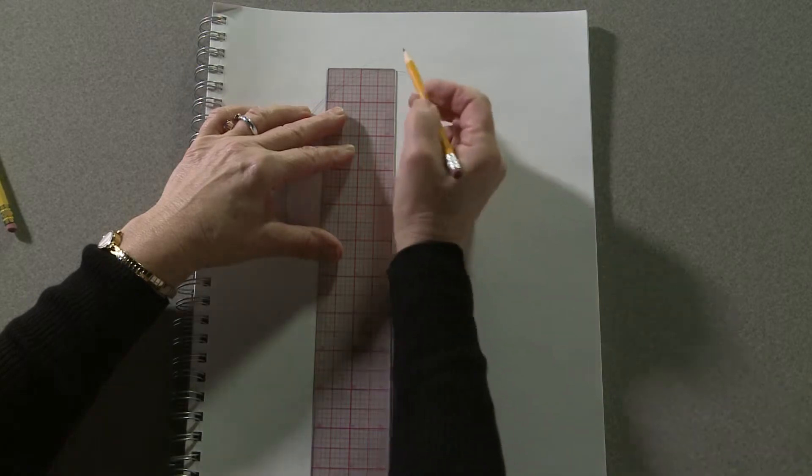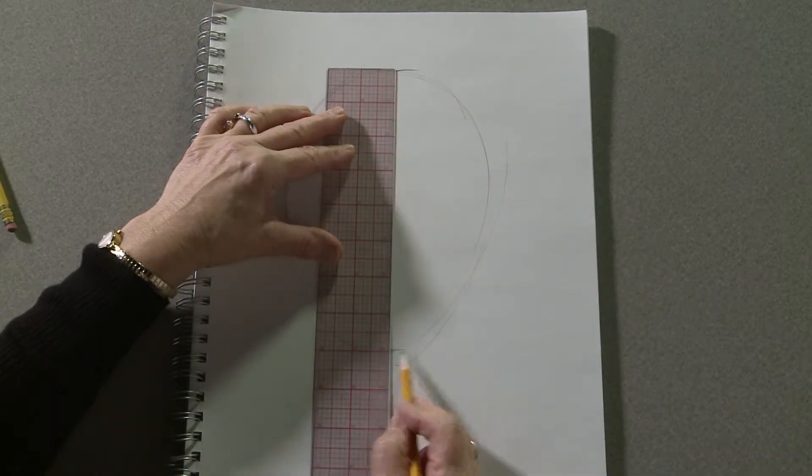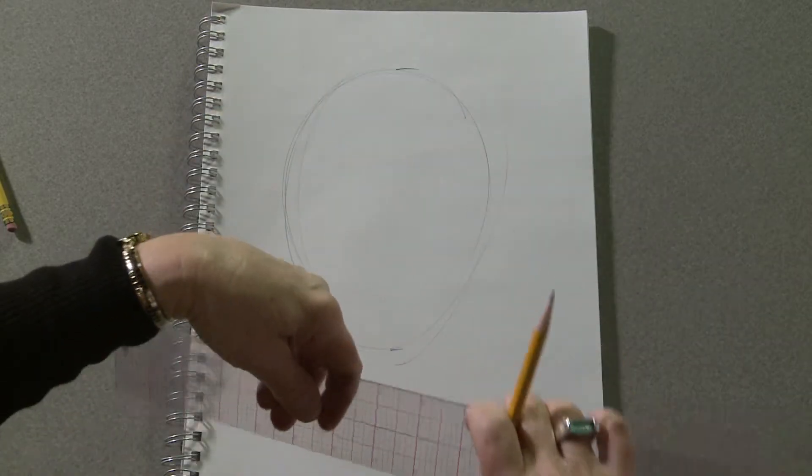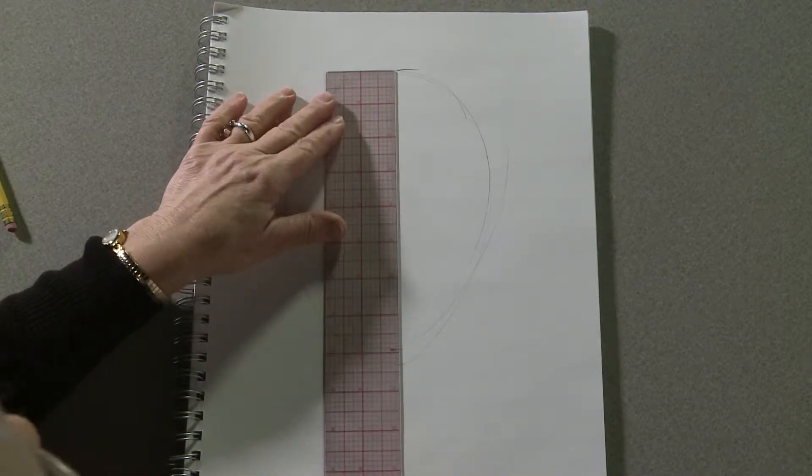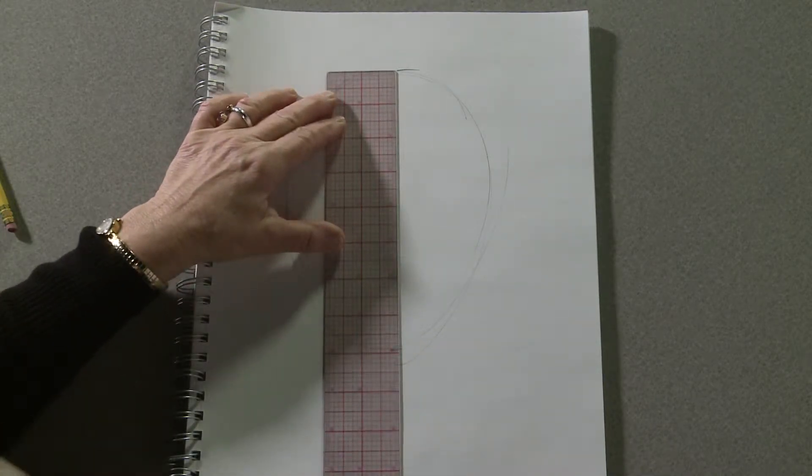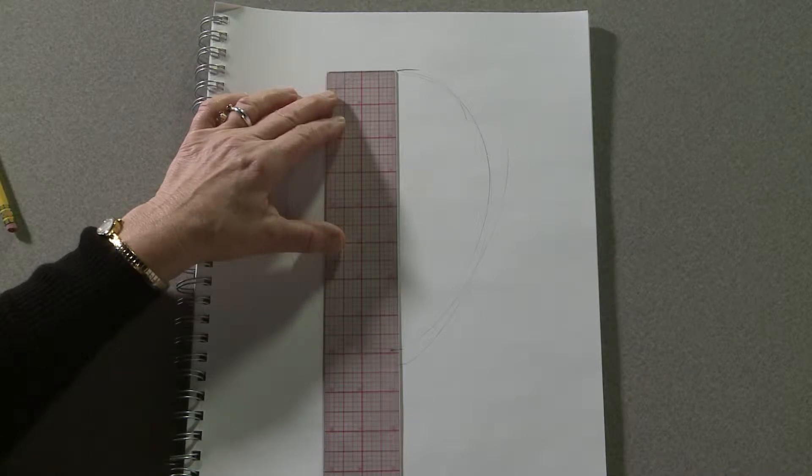She's eight inches from the top of her head to the bottom of her chin. Now we're going to divide her face into sections that will represent the location of her eyes, the bottom of her nose, and the split between her upper lip and lower lip.